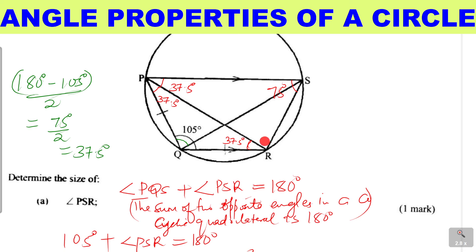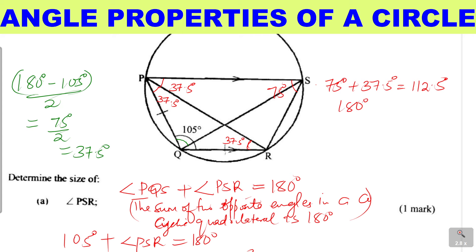From there we can get another angle. Consider triangle PRS — in that triangle we have two known angles: 75 degrees and 37.5 degrees. Adding them gives 112.5 degrees. Then we take 180 degrees minus 112.5 degrees, because the sum of angles in a triangle is 180. This gives angle PRS equal to 67.5 degrees.